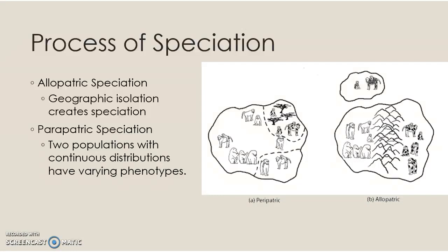There are two different ways we talk about speciation, basically based on geography. With allopatric speciation, we have geographic isolation — this geographic reproductive isolating mechanism is the mountain range here. It keeps organisms from reproducing, and these organisms also evolve differently from each other, eventually becoming two different species. So with allopatric speciation, there is a geographic boundary, and two new species evolve.